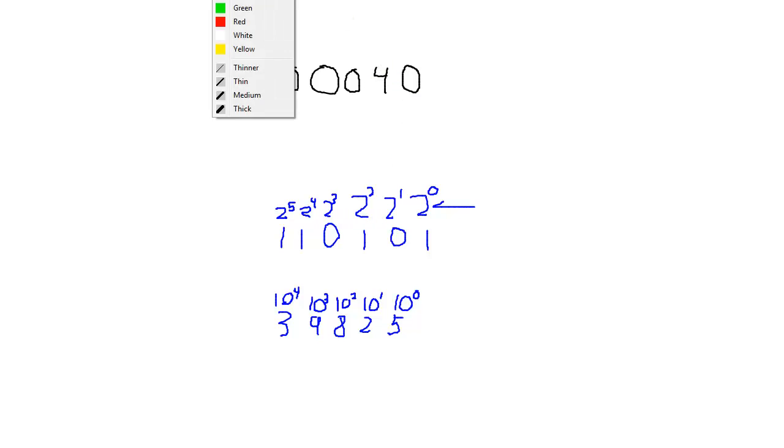Well, hexadecimal, hopefully no surprises here, this is 16 to the 0, that's not a 16, this is a 16, to the 0, and then 16 to the 1, 16 to the 2, 16 to the 3, 16 to the 4, alright.